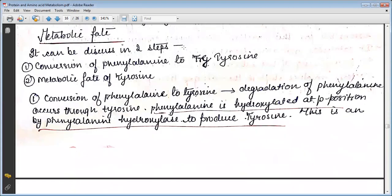The metabolic fate includes two steps: the conversion of phenylalanine to tyrosine, and the metabolic fate of tyrosine. First, the conversion of phenylalanine to tyrosine.